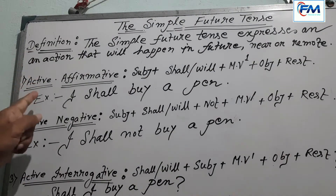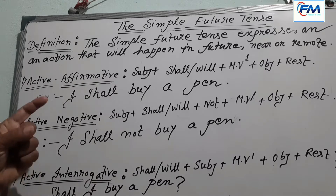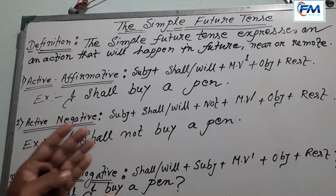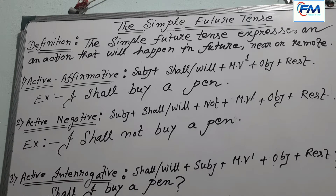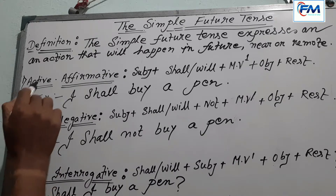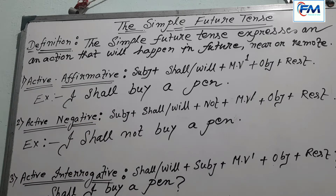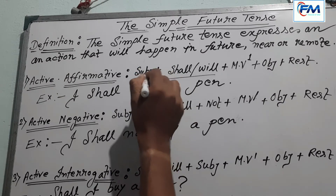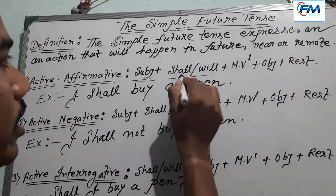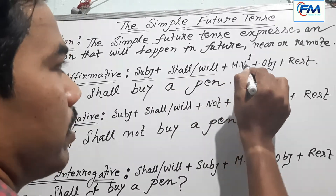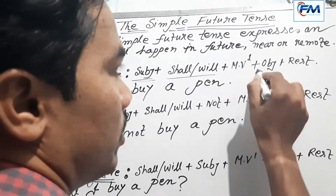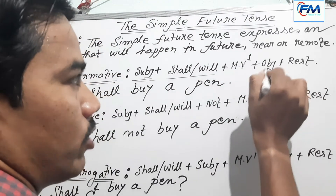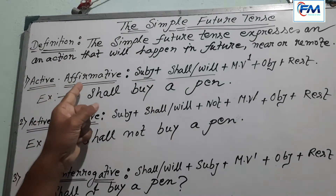What is the first rule of the simple future tense? In this class I will discuss about the active part of the simple future tense, and in the next class I will discuss about the passive part. So our first rule is active affirmative. The structure is: Subject + shall/will + main verb (present form/MV1) + object + rest.